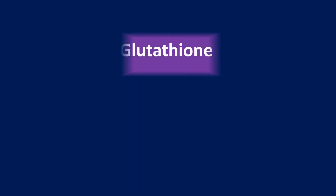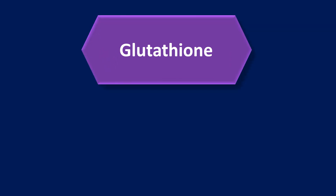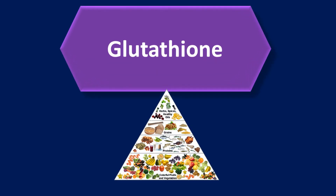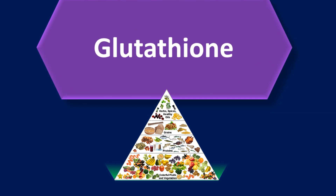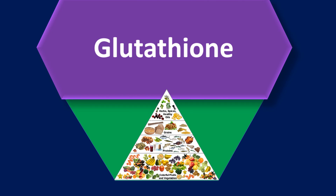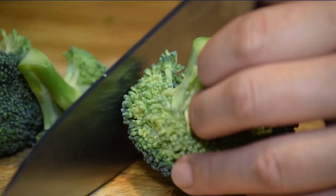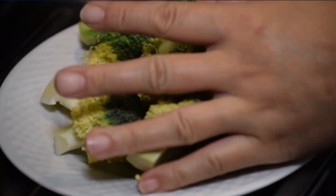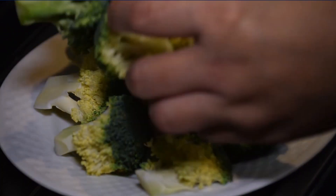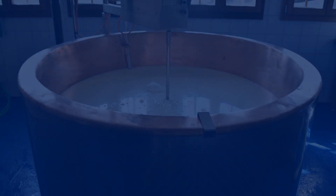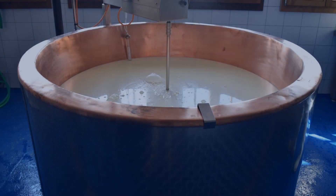Glutathione is composed of the amino acids cysteine, glycine, and glutamine, and the mineral sulfur. The diet should provide adequate amounts of these building blocks required to produce glutathione. Broccoli, cauliflower, watercress, kale, garlic, and onions are very healthy and rich in sulfur-containing molecules. Besides, whey proteins are rich in cysteine and other amino acids necessary for producing glutathione.